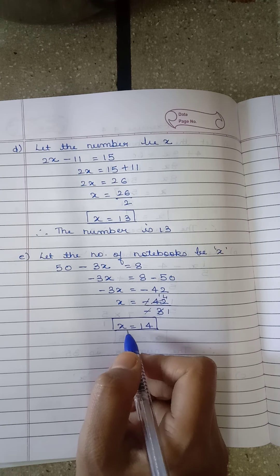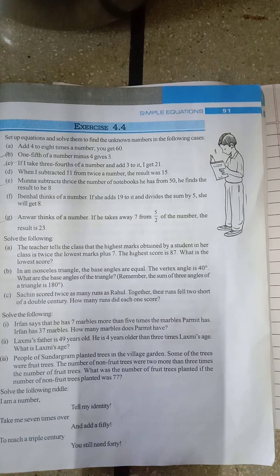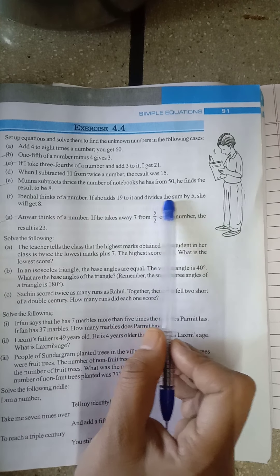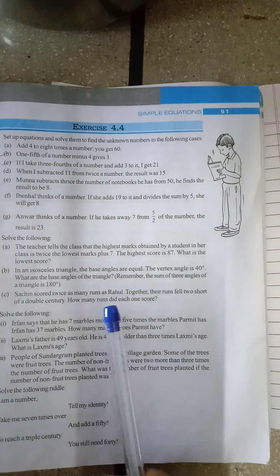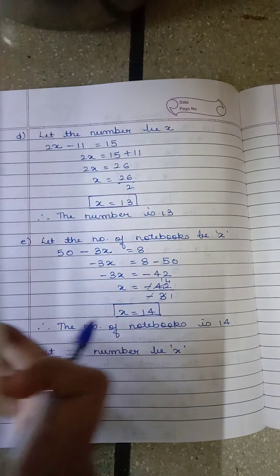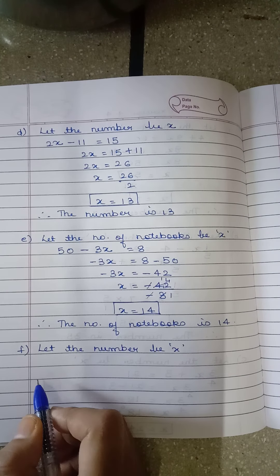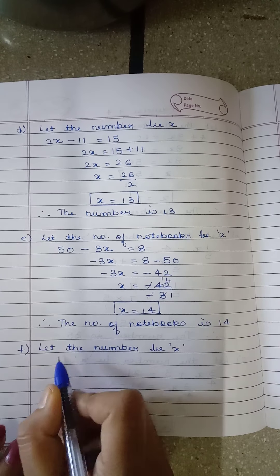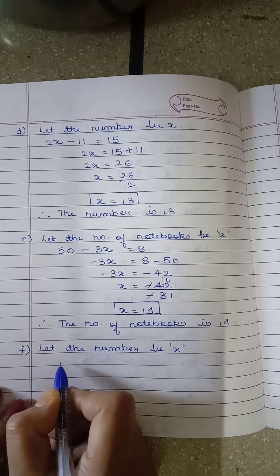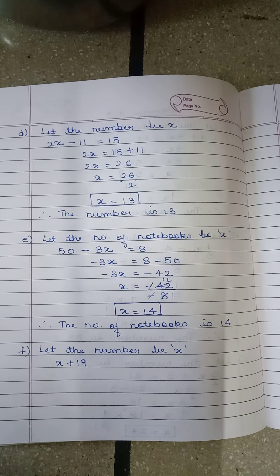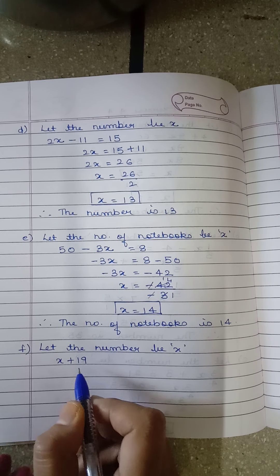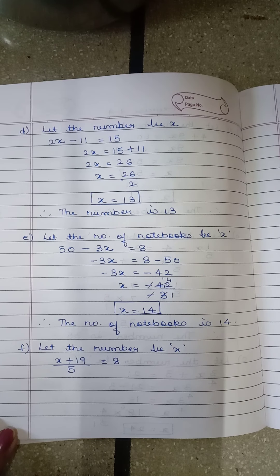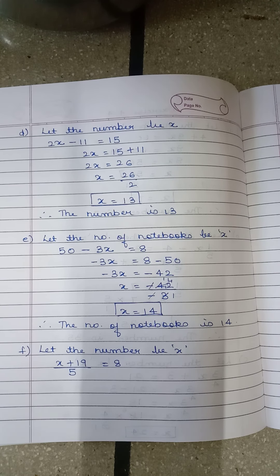Part (f): Ibne Hard thinks of a number. If she adds 19 to it and divides the sum by 5, she will get 8. Let the number be x. She adds 19 to it means x + 19; divides the sum by 5 means divided by 5; she will get 8 means equals 8. Framing the equation correctly is very important to get the correct solution.